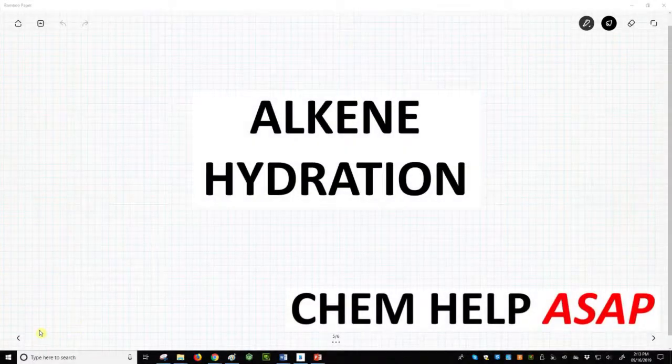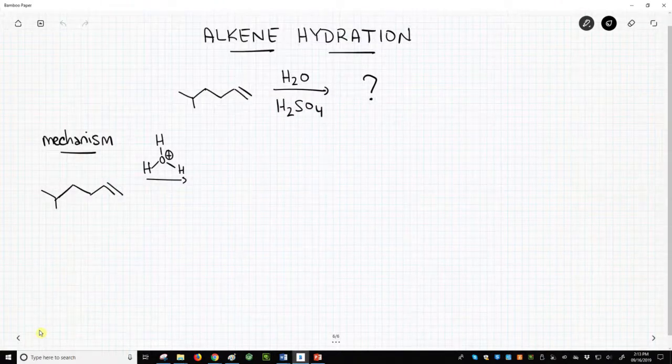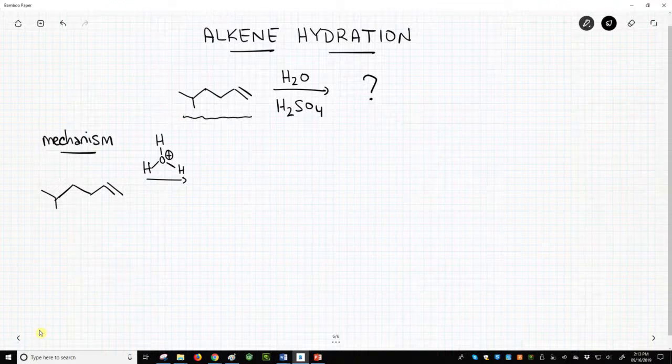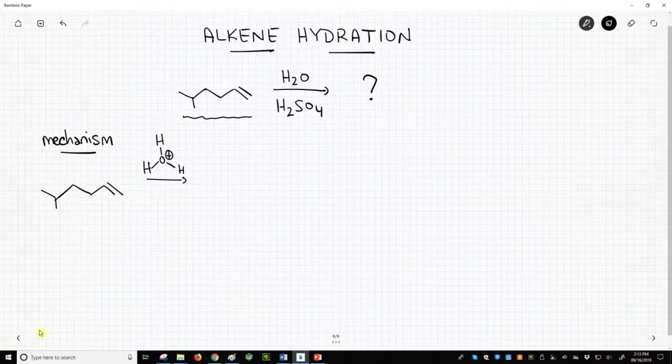Hello from Chem Help ASAP. Let's see an example of an alkene hydration. Here is our problem. We're treating this molecule, 5-methyl-1-hexene, with a strong acid, H2SO4, and water.